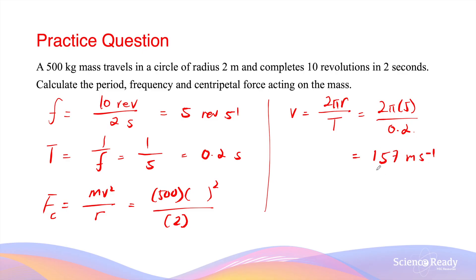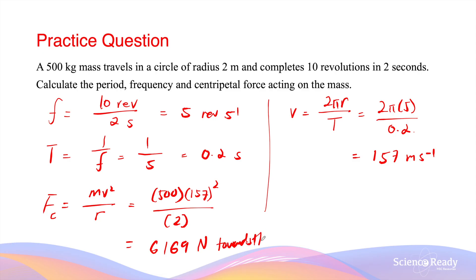Using 157 m/s in the centripetal force equation gives quite a large number: approximately 6169 N. The direction of this centripetal force is towards the centre of the circle, because it is a centre-seeking force.